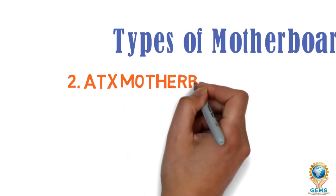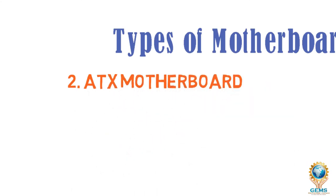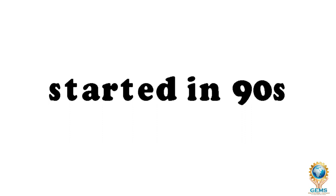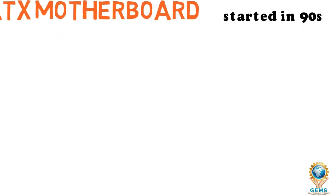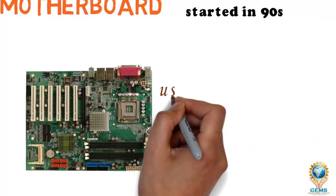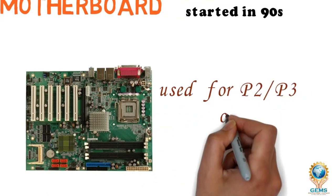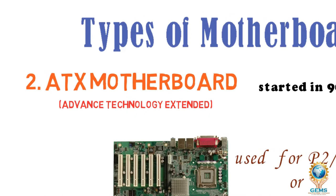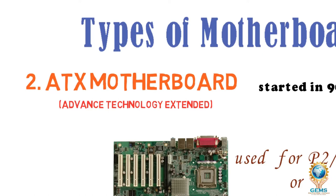Now we will see about the next type of motherboard, the ATX motherboard. The ATX motherboard started in the 90s and is still available. The ATX connector on the motherboard consists of a single connector. These boards are used for P2, P3, or P4 processors. ATX stands for Advanced Technology Extended. This motherboard configuration was developed in the mid-90s and is still in use. The ATX motherboard is an improvement over the previously used AT motherboard and is the most common motherboard design.